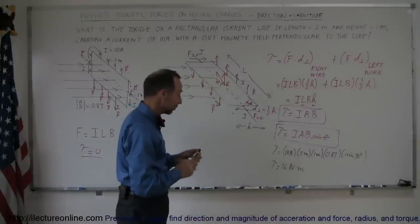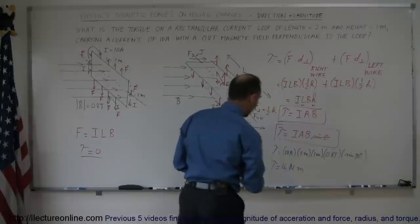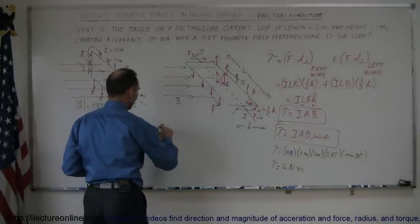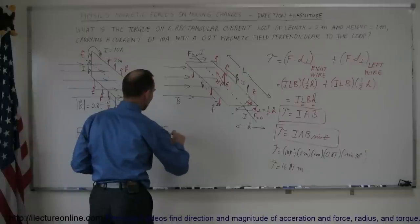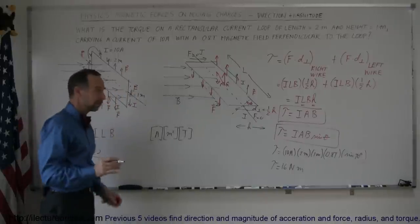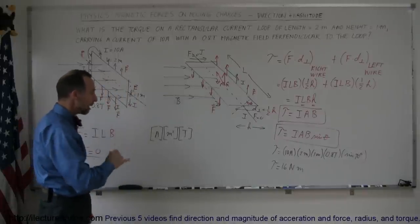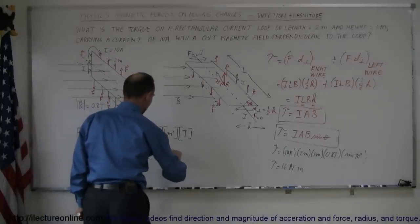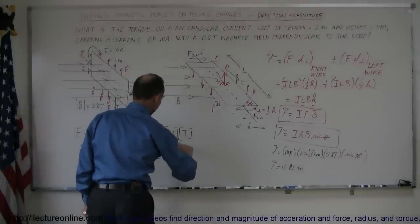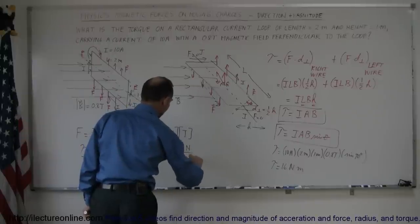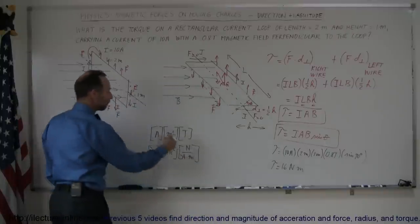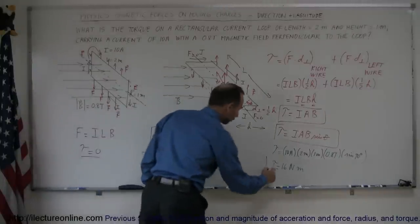Let's verify the units: we have amps × meters × meters (meters squared) × Teslas. Remember that the units for Teslas is Newtons per amp·meter. So this equals amps × meters squared × Newtons per amp·meter. The amps cancel out and one of the meters cancels out, leaving Newton meters, which is the unit for torque.